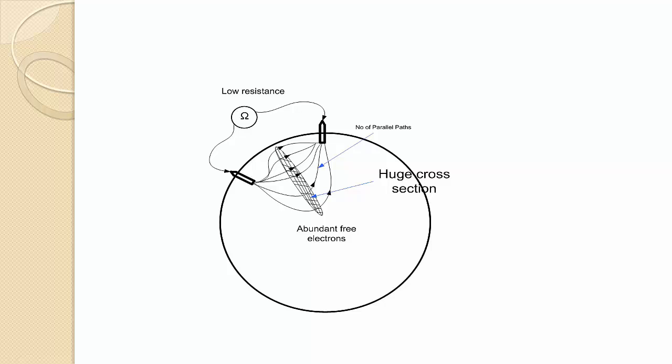In another perspective, we can also consider there are infinite number of parallel paths between the two electrodes. And from electrical theory we know, as the number of parallel paths increases, the total resistance will become very small. That is happening here.